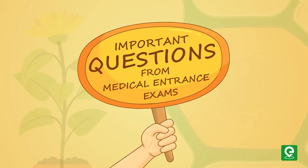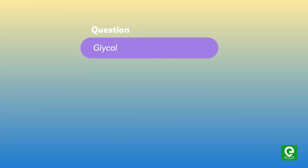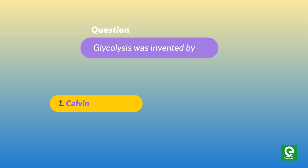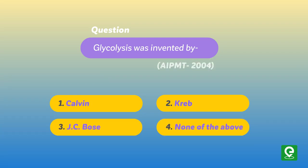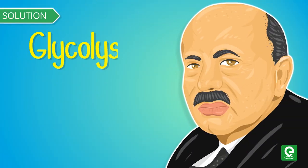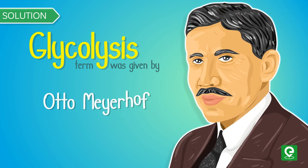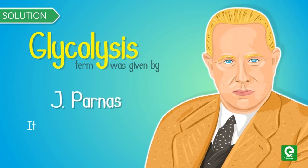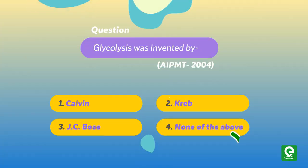Let's solve some important questions from medical entrance exams. Question: Glycolysis was discovered by — (1) Calvin, (2) Krebs, (3) J.C. Bose, or (4) None of the above. This question was asked in AIPMT 2004. Solution: Glycolysis was given by Gustav Emden, Otto Meyerhoff, and J. Parnas, and is referred to as the EMP pathway. Hence, option 4 is correct.